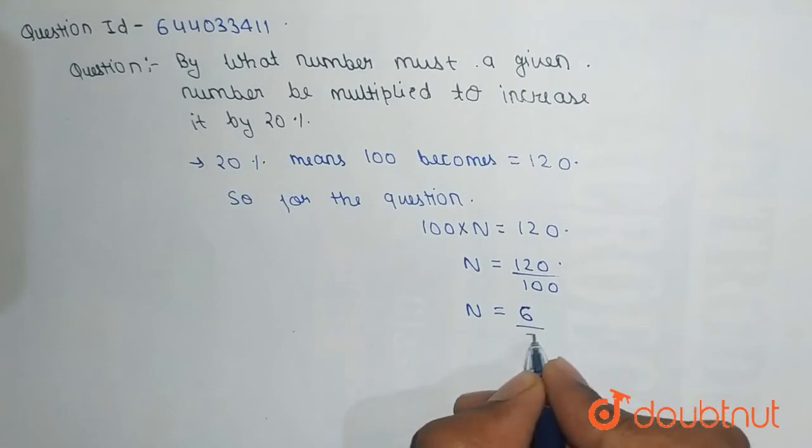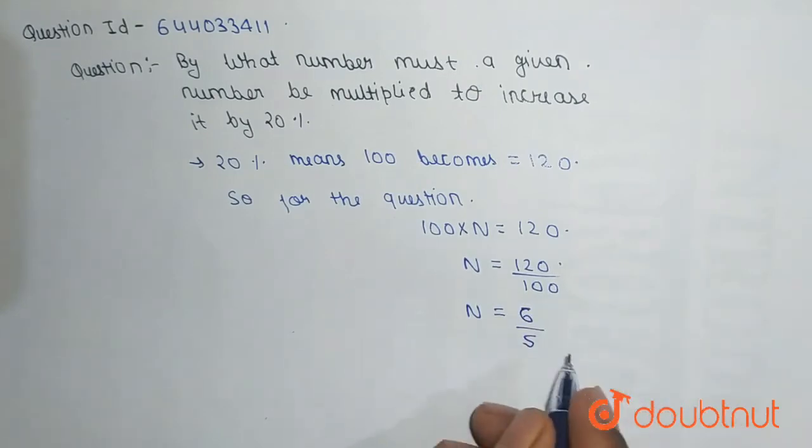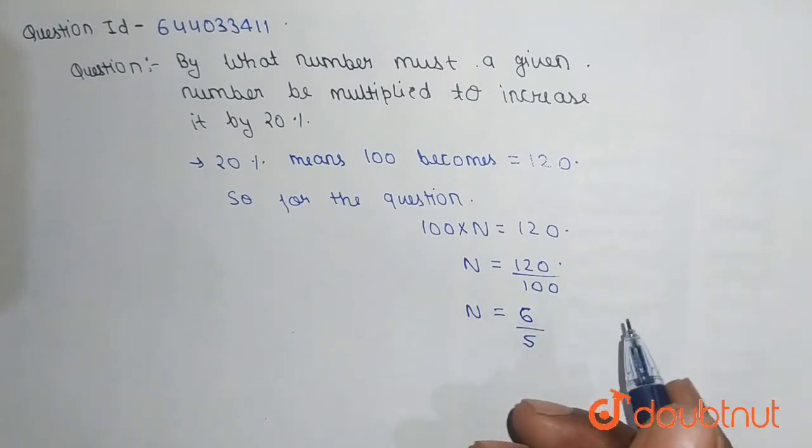6/5. This means if we multiply any number by 6/5, it will increase that number by 20%.